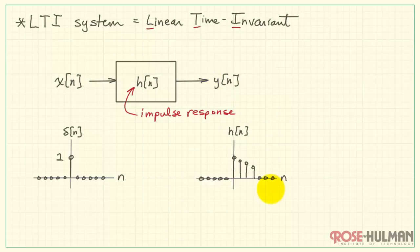The system responds with some sort of behavior on the output. So this single impulse triggers a series of, you could think of them as impulses as well.